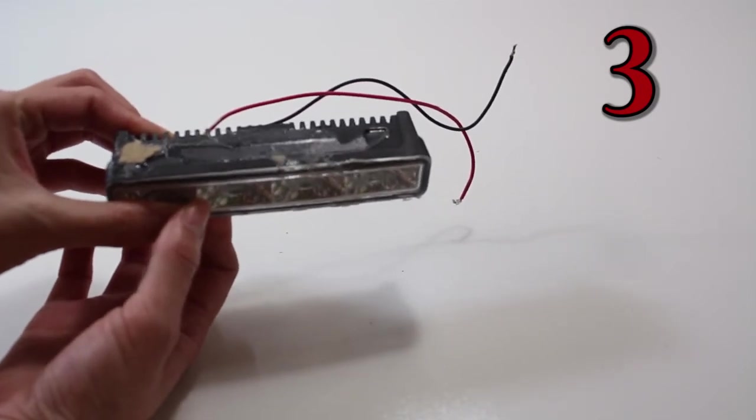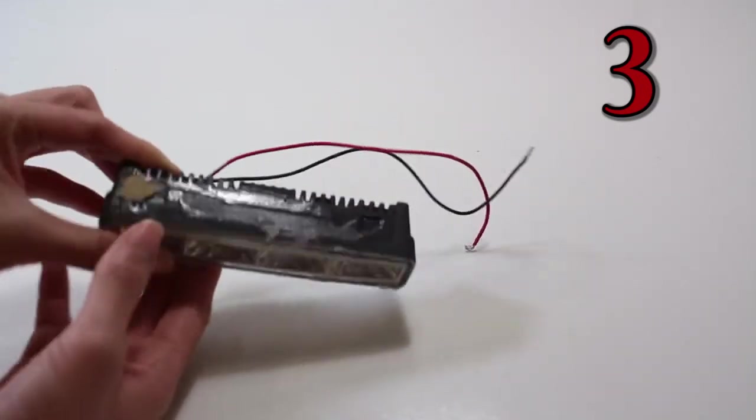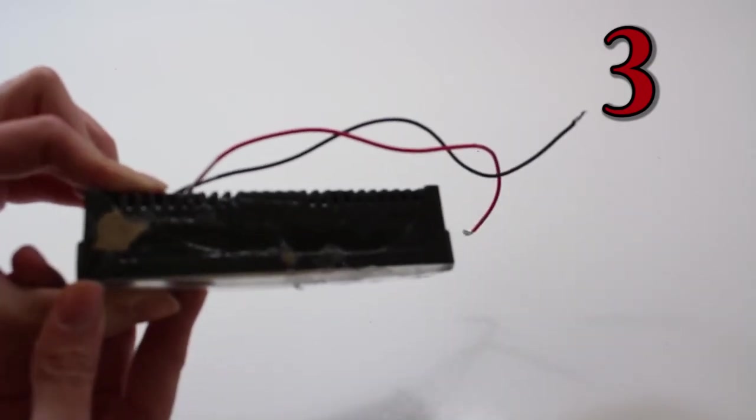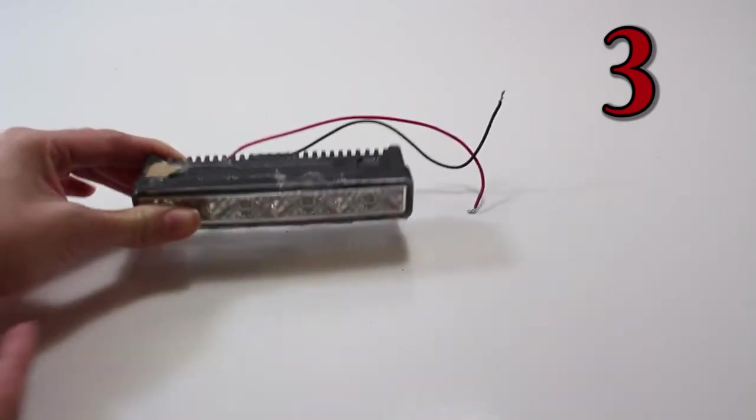If you want to tint your LED assembly, we do recommend vinyl overlay instead of paint. The vinyl gives you a great look without being a permanent modification.